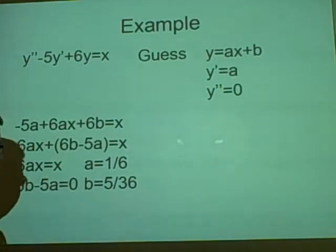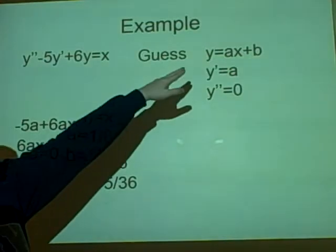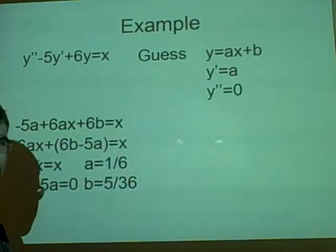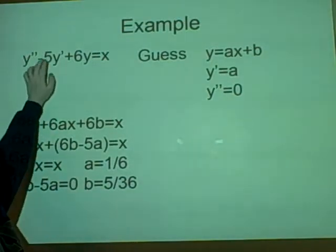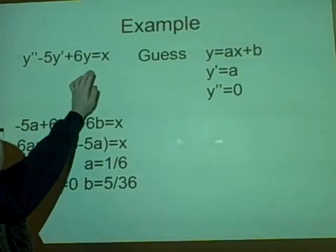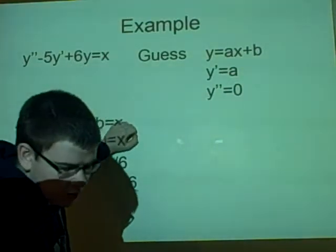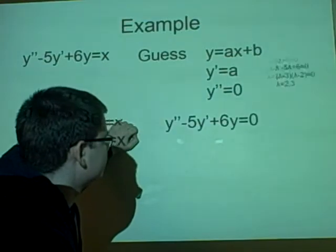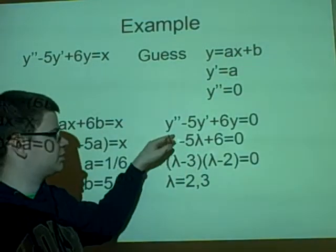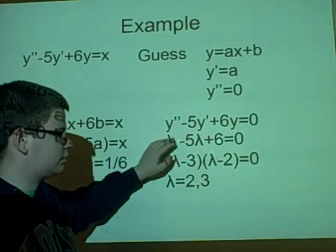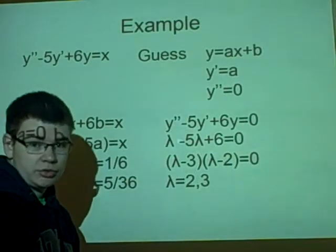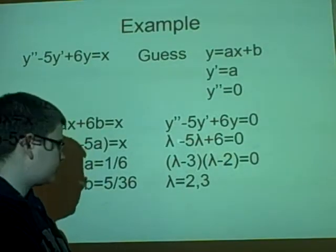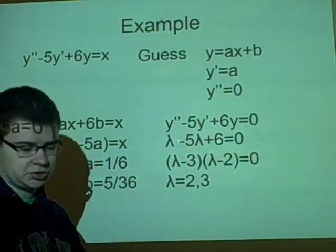Now we've done that part. Now what we want to do, because we've got our values for a and b which we can put into here, we want to solve it homogeneously. So that's just basically putting the lambda. So we have lambda^2-5*lambda+6=0. We just ignore this, and that's pretty straightforward. So we can just simply factorize it. So lambda-3 times lambda-2, and lambda is 2 and 3.